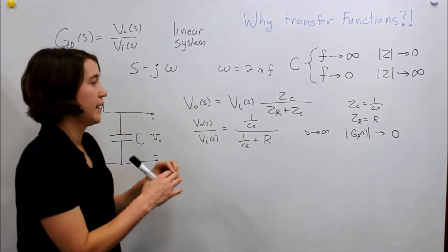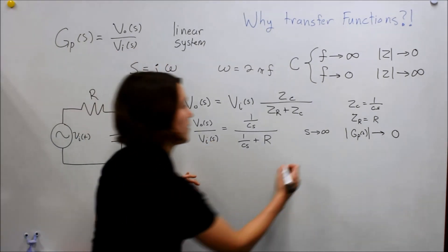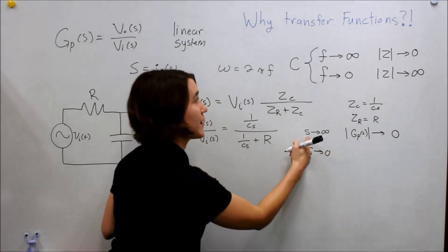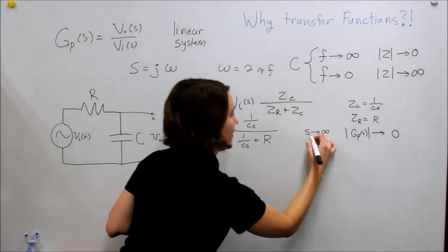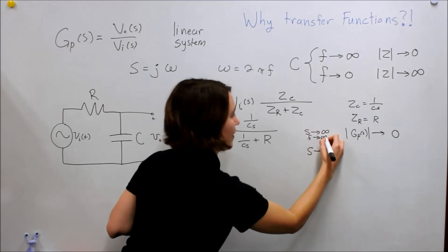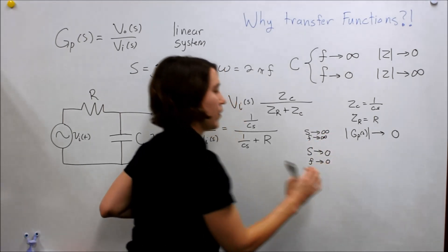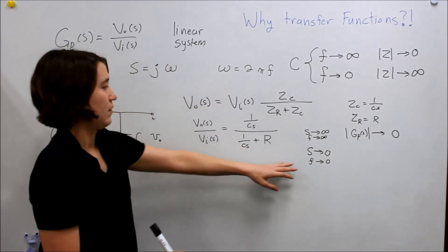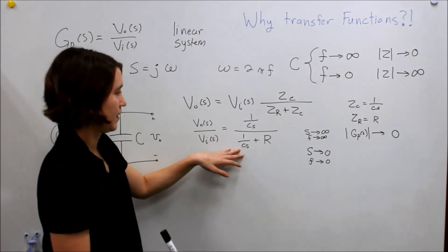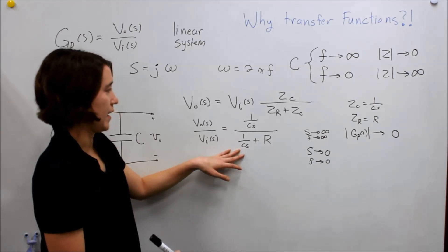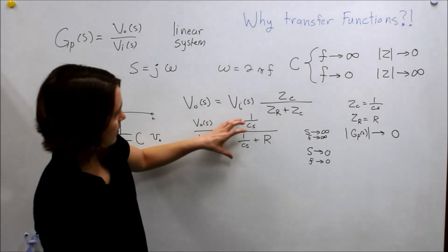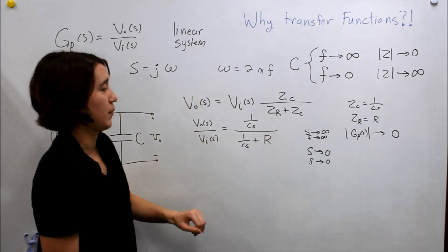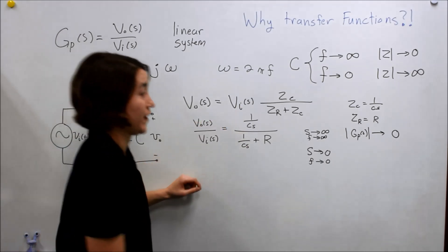Now let's look at the other case. So what happens if we have a very small frequency? So S goes to zero. And remember, S going to zero is essentially the same as f. So if we have a very low frequency, almost DC, we plug that into here. We see that these dominate. So we'll actually get close to one. So this becomes not important, because these both go towards infinity. So the gain of the system goes towards one.